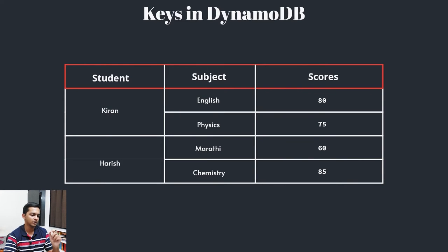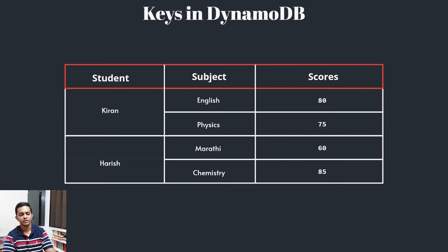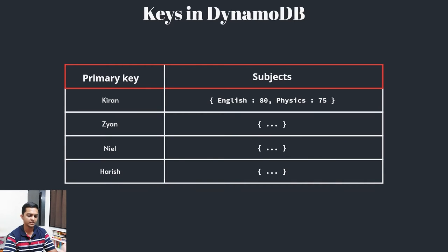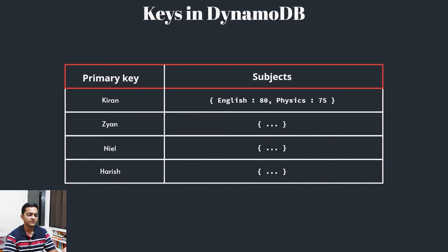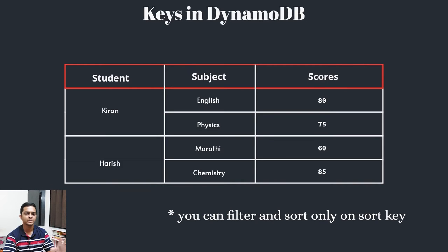So we can introduce a sort key. What a sort key allows us to do is identify each individual subject at its own partition key. For example, the 'English' column gets 400 kilobytes of dedicated space, and the same goes for 'Physics' plus 'Kiran'. Compared to the previous pattern, this gives a lot more flexibility. One important thing in DynamoDB: you can only do querying, sorting, and filtering based on the partition key and sort key.